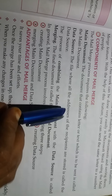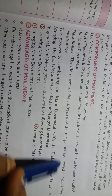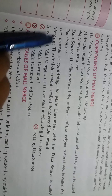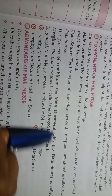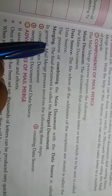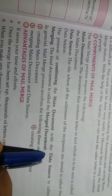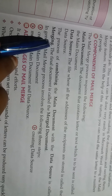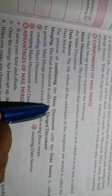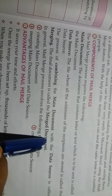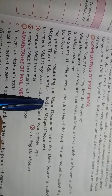Bhoat saara address recipients ka store karte hain usse kehte hain data source. The process of combining the main document with the data source is called merging. The final document produced is called the merge document.